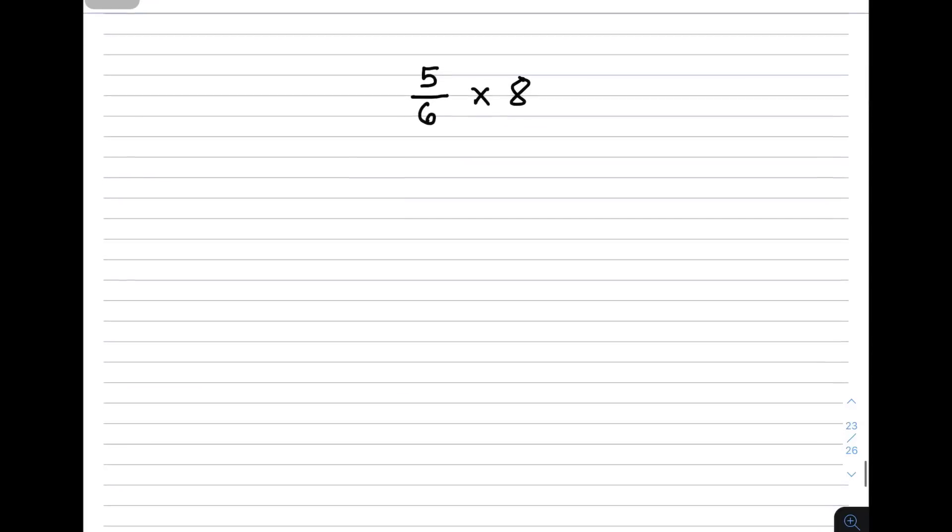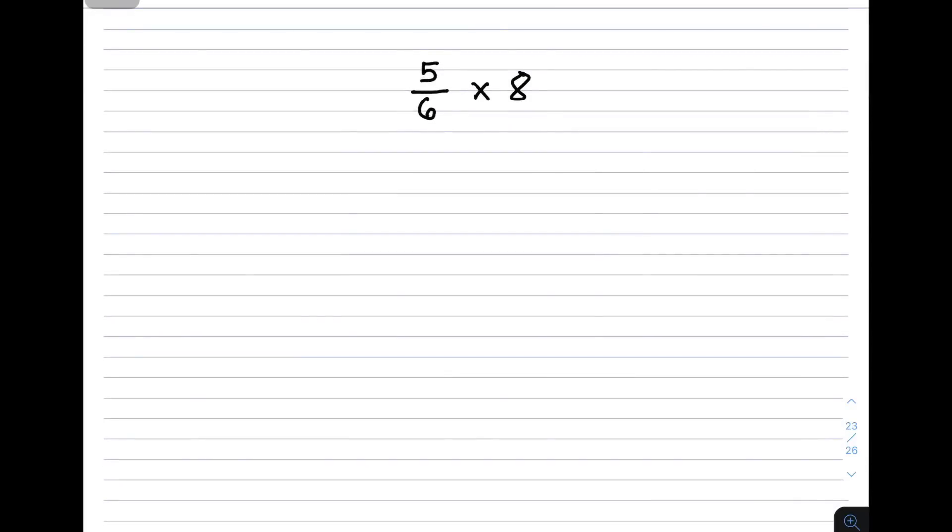Let's move on to example number 2: 5 over 6 times 8. You need to remember that when you see a whole number, it automatically has an invisible denominator of 1. Using the conventional way, multiply 5 and 8 to get 40, then 6 times 1 gives 6.